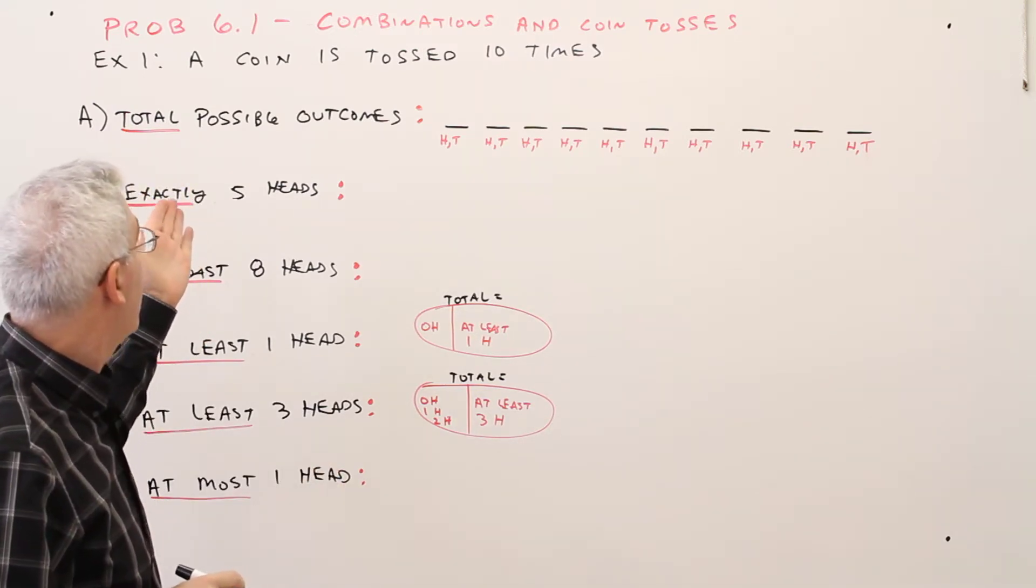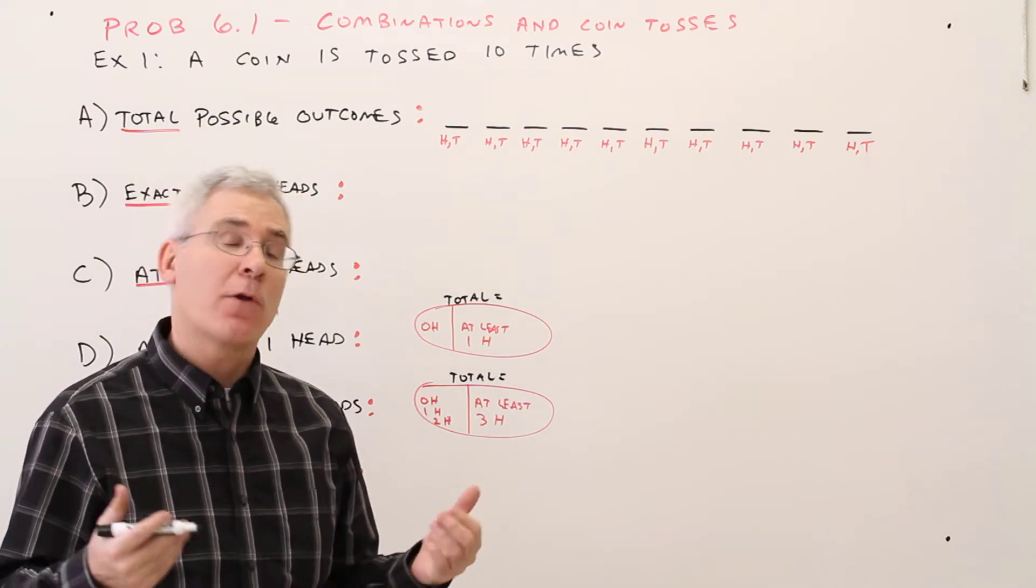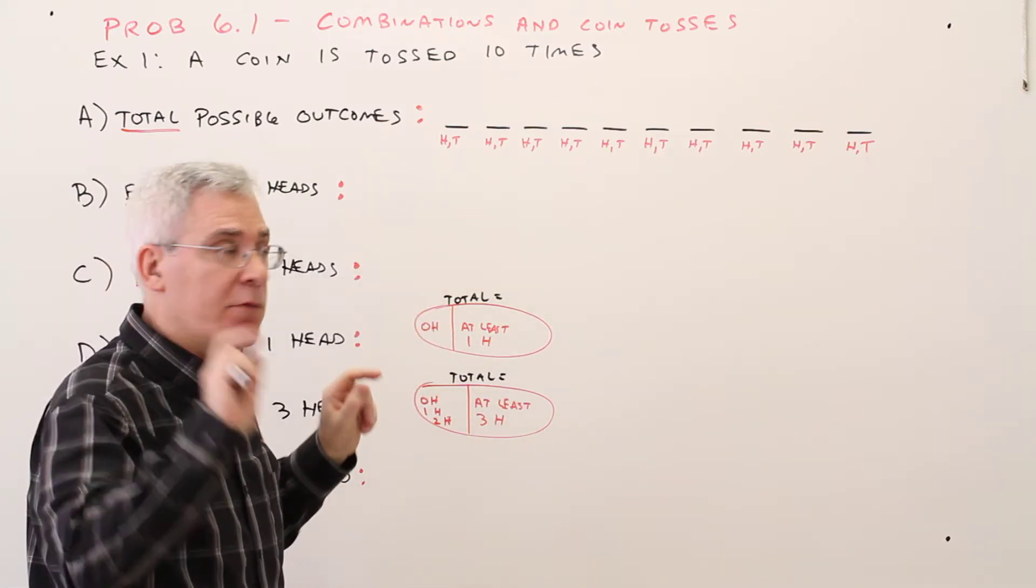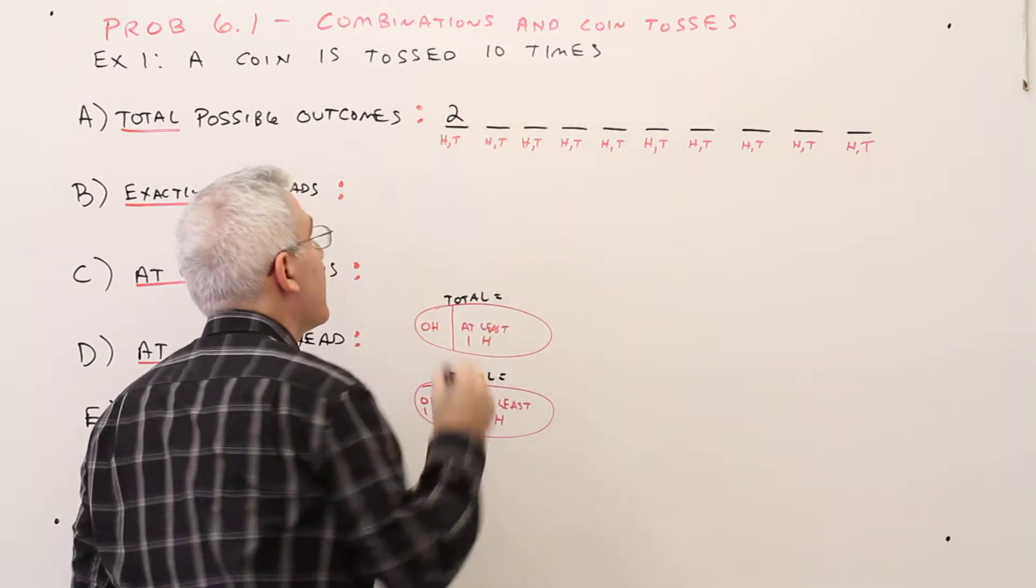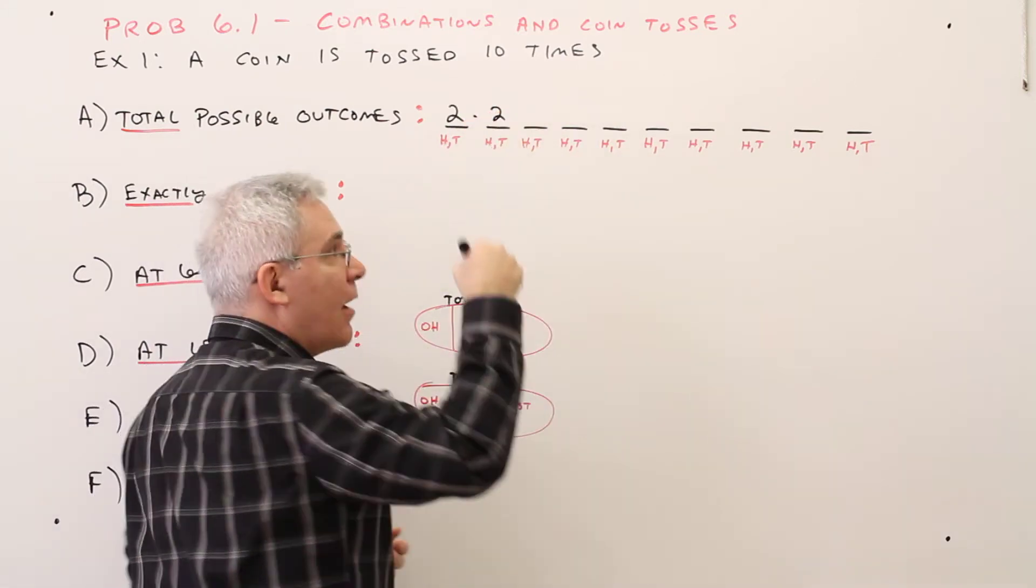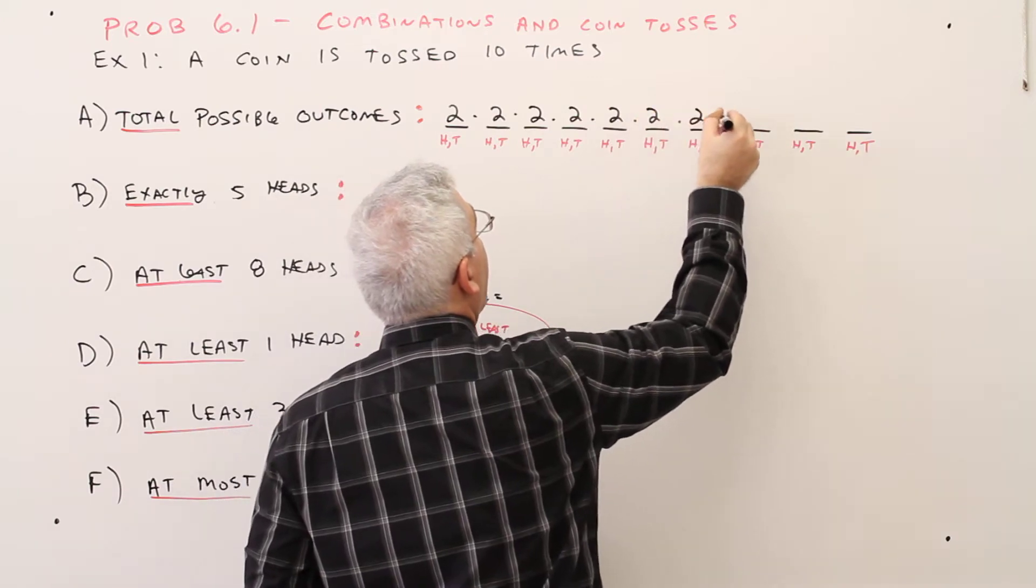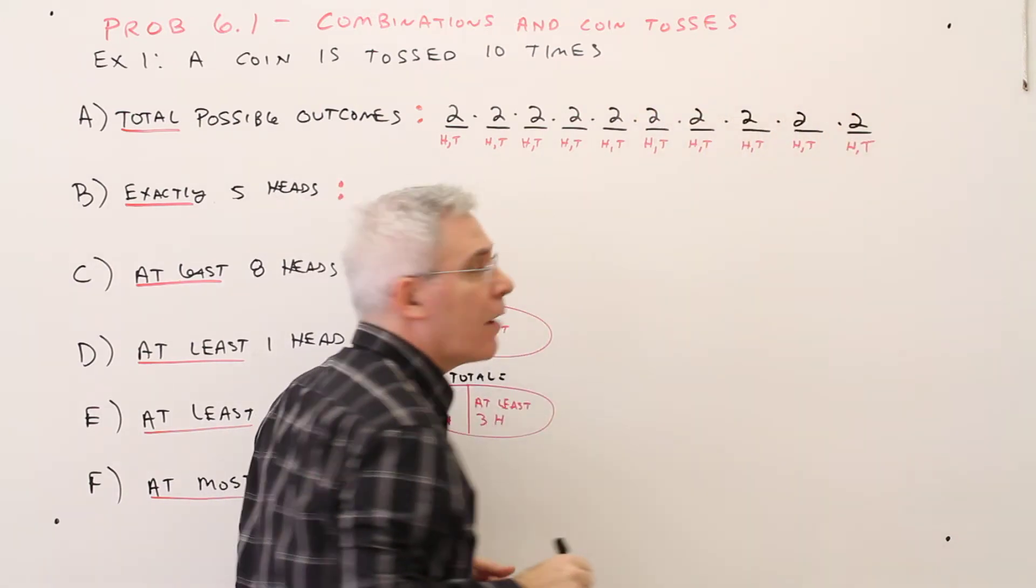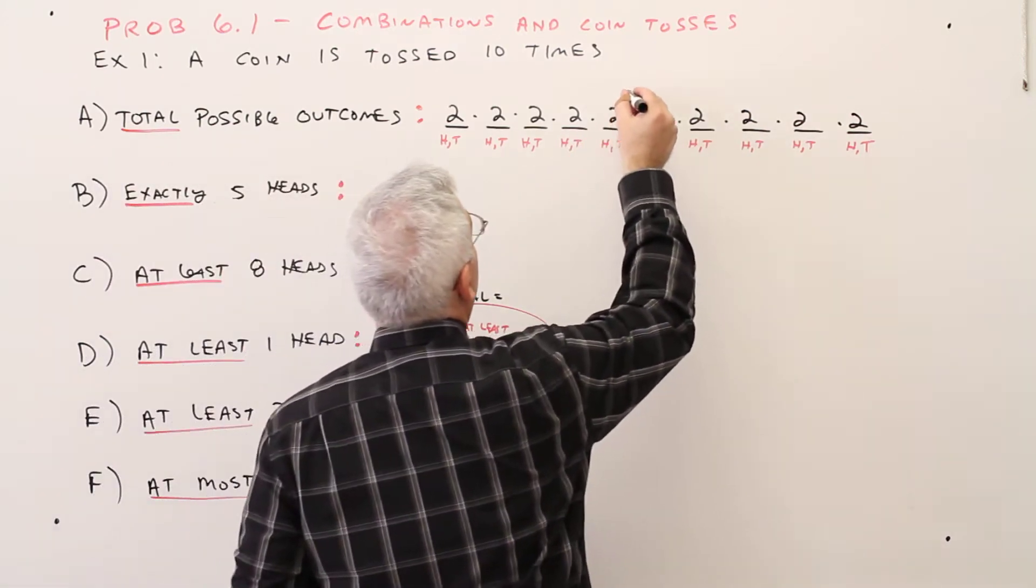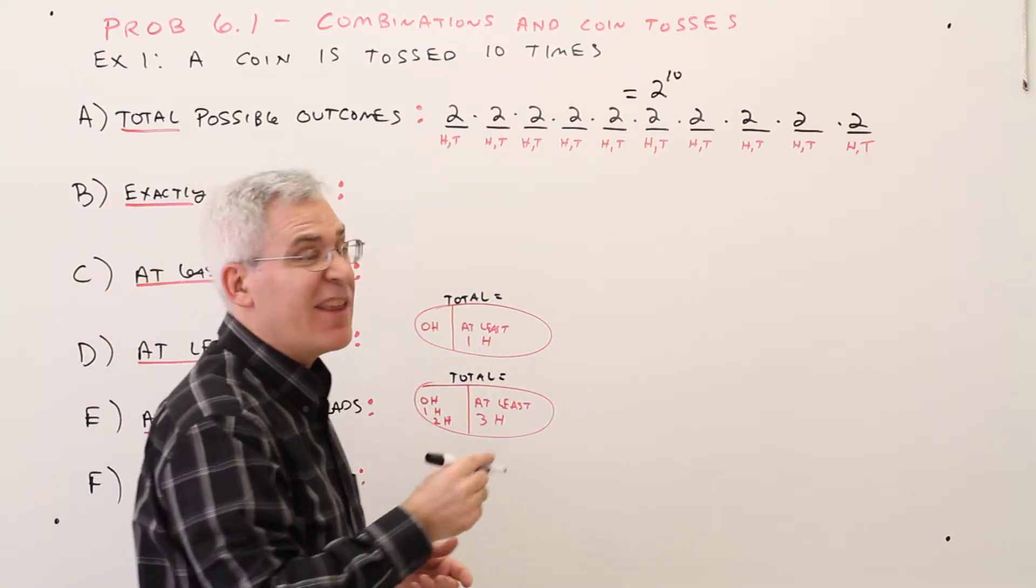First, part A. What are the number of total possible outcomes? We're going to go back to the multiplication rule. Event 1 can be heads or tails, there's two ways of doing that event. Event 2 could be heads or tails, two ways of doing that event, and so on. So I'll just keep multiplying by 2. A shorthand notation would be 2 to the 10th. So equals 2 to the 10th, and you could use your fingers or your calculator and you get 1,024.